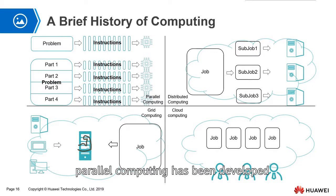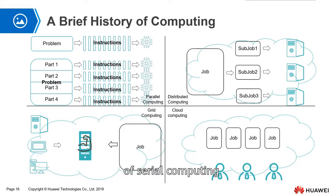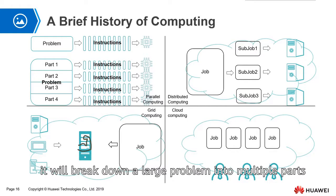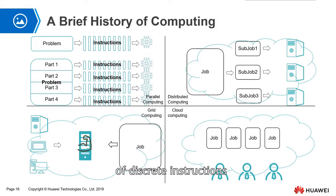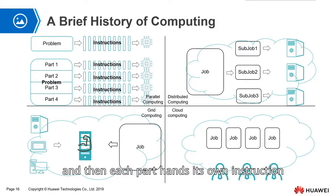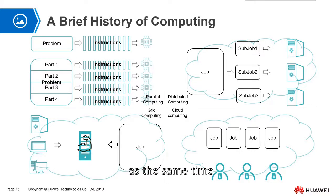Therefore, parallel computing has been developed. In the simple case, parallel computing can solve some of the limitations of serial computing. First, it will break down a large problem into multiple parts that can be solved simultaneously. Each part is transformed into a series of discrete instructions, and then each part sends its own instructions to its own CPU for processing. Each CPU processes the instructions from the different parts at the same time.